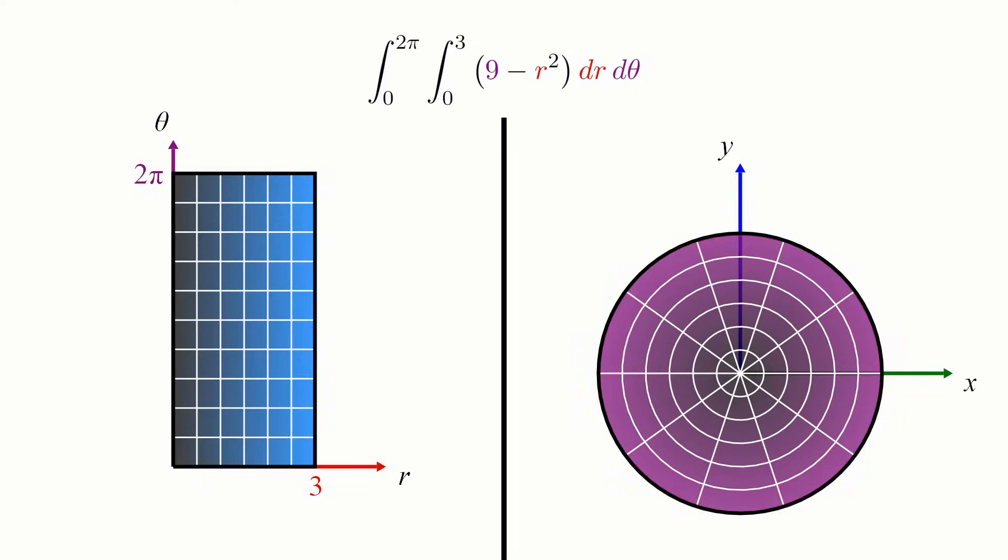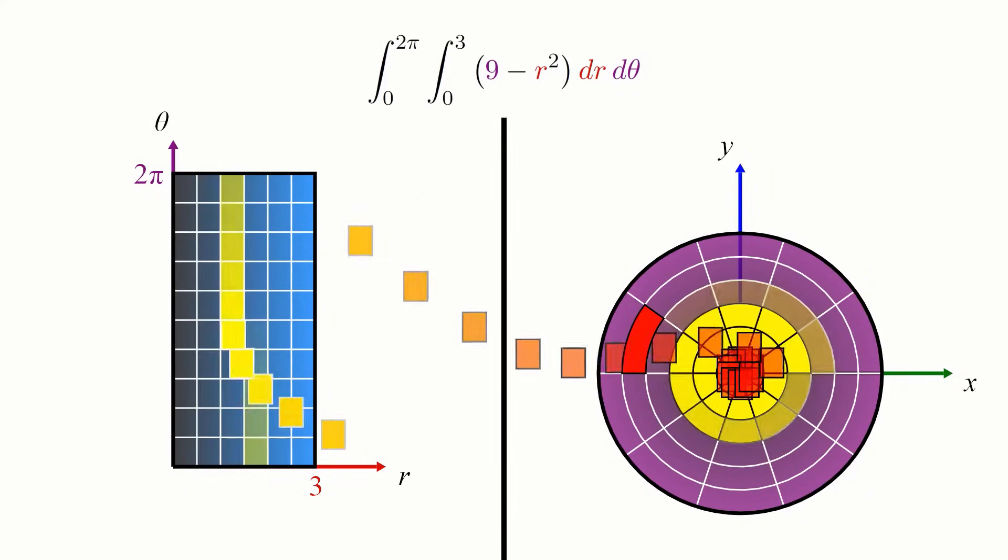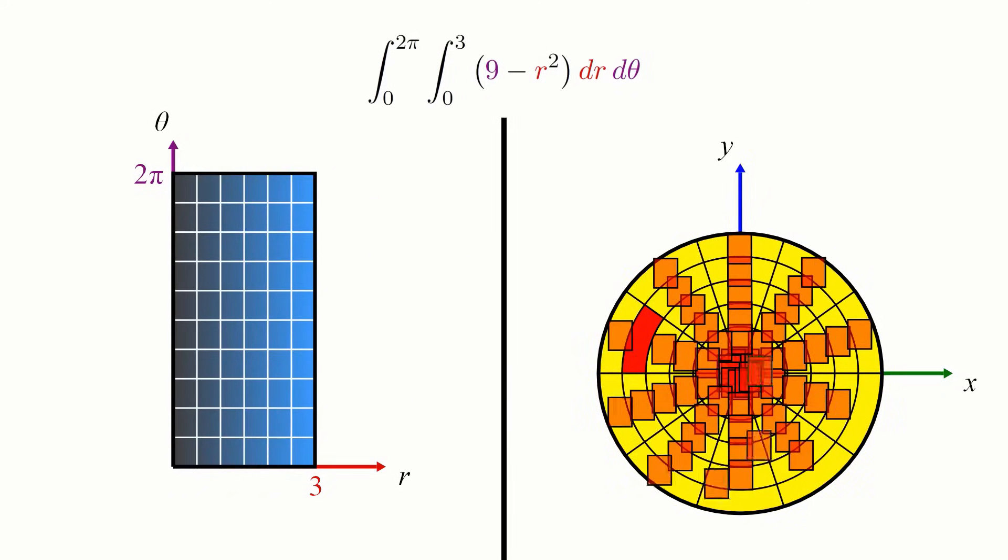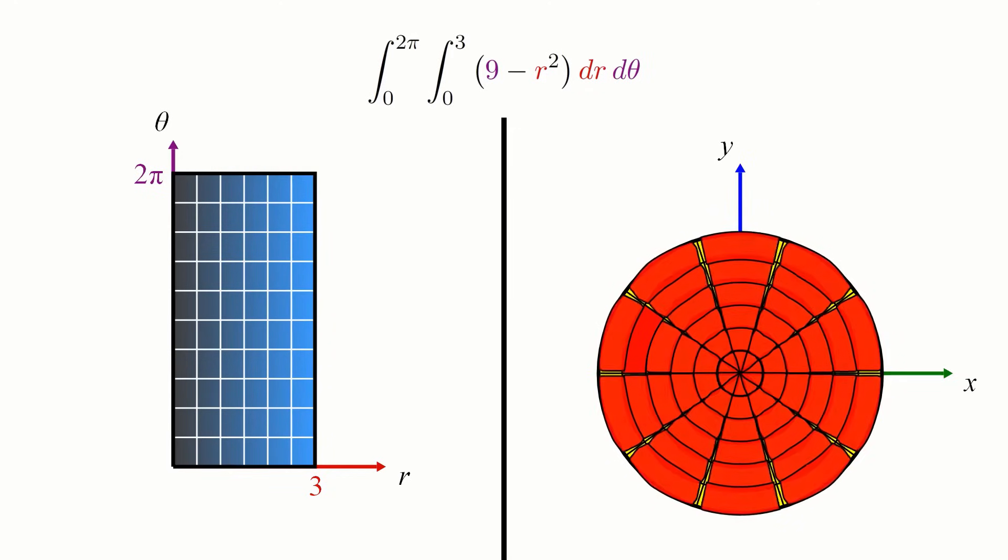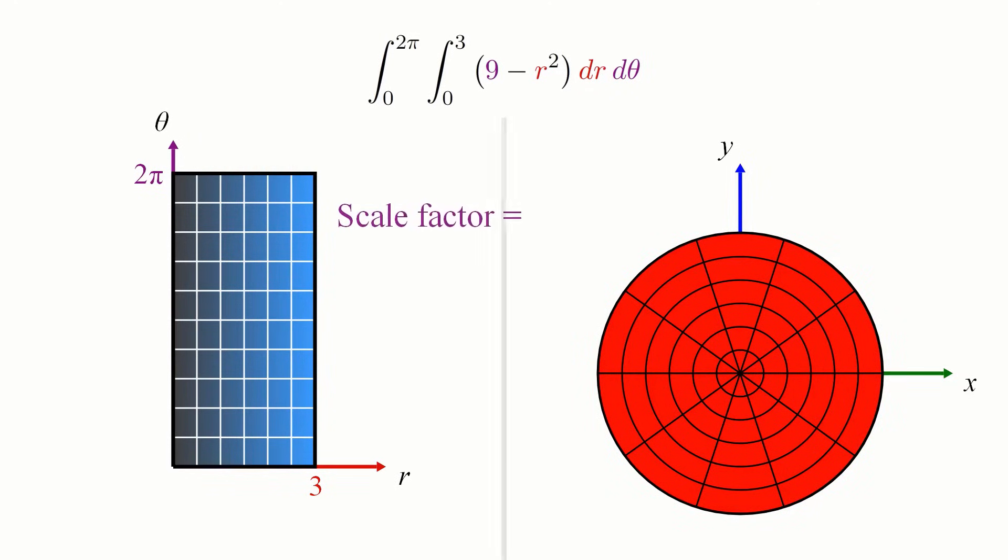This comes down to multiplying the area of each tiny rectangle dr by d theta in the integral by a certain scale factor in order to make the area of the original tiny rectangle match the area of the trapezoid. This scale factor is the ratio between the area of a trapezoid in xy space and the area of the original rectangle in r theta space. This will cancel out the distortion caused by transforming from r theta to xy. Note that this scale factor will be different depending on which r theta rectangle we're looking at because different rectangles are distorted by different amounts depending on where they're located.